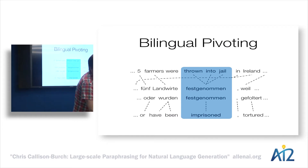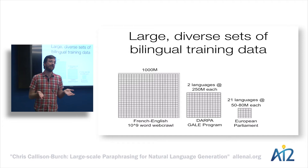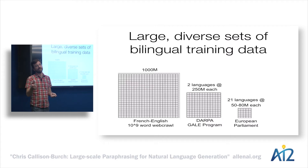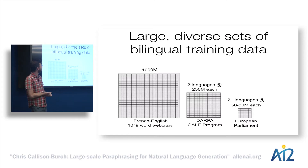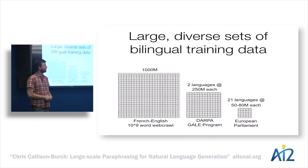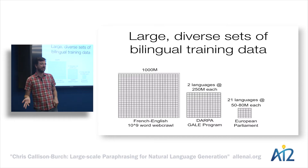The nice thing about using this type of data is the range we have. We've got about a quarter of a billion words worth of bilingual parallel text between Chinese and English and Arabic and English that DARPA creates for their translation programs. I also had a nerdy hobby where I scraped every bilingual French-English webpage I could find and had probably the largest publicly available bitext — nearly a billion words of French paired with a billion words of English.